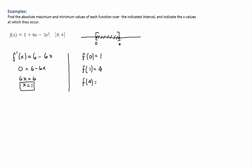And when you plug 4 you get 1 plus 24, 25 minus this is going to be 16 times 3 which is going to be 48. So you're going to have 25 minus 48 is going to be negative 23.